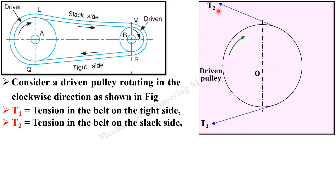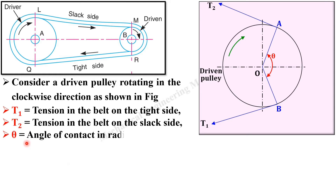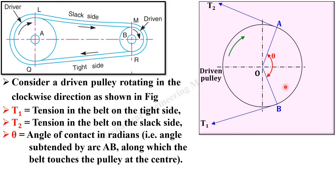From A to B that will be the contact angle on the driven pulley, or the belt and pulley surface. Theta is considered as the contact angle, or sometimes it is called the lap angle. Theta will be the angle of contact in radians; you know that theta will be multiplied by π/180 to convert it from degrees to radians.